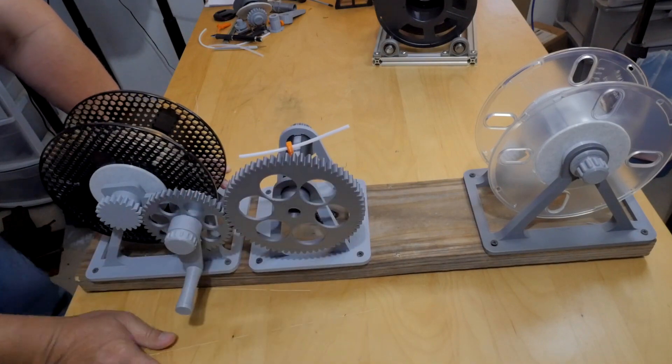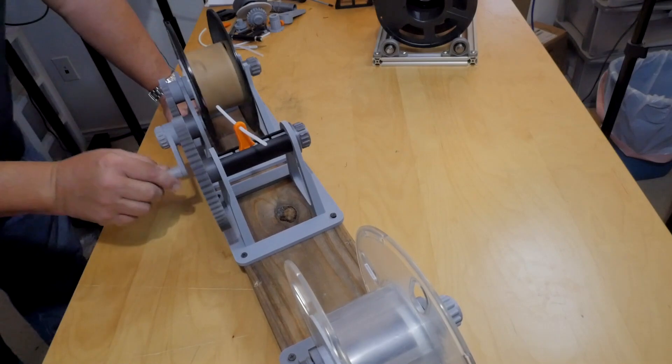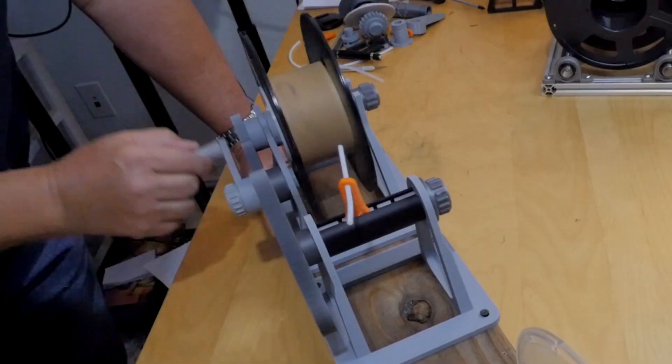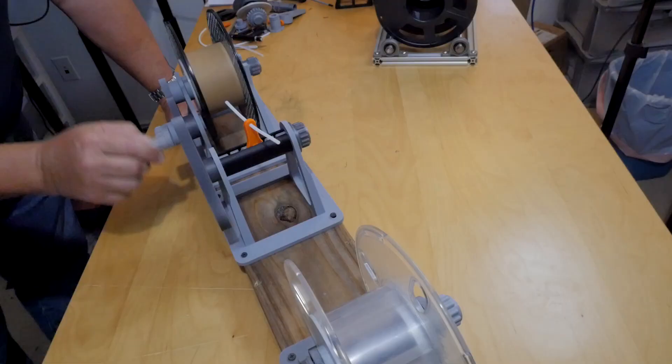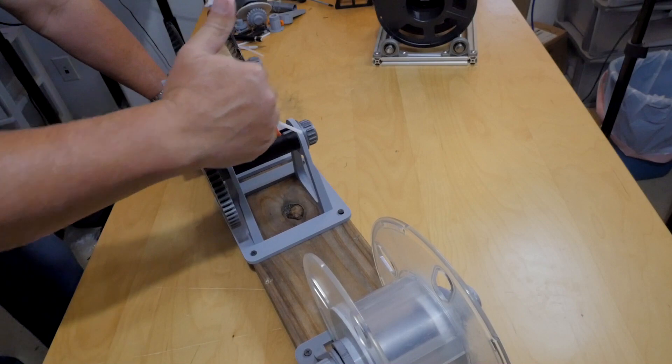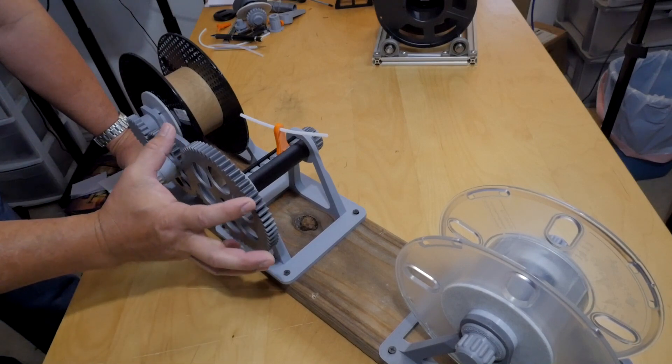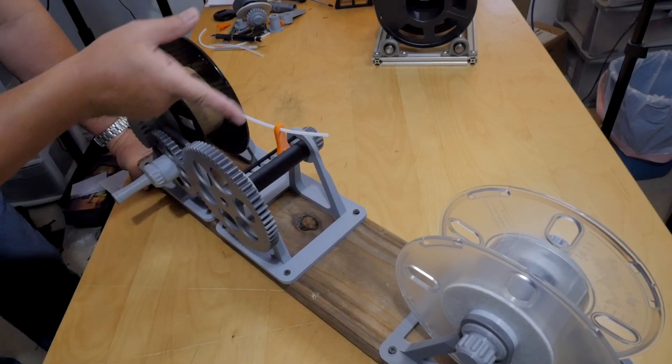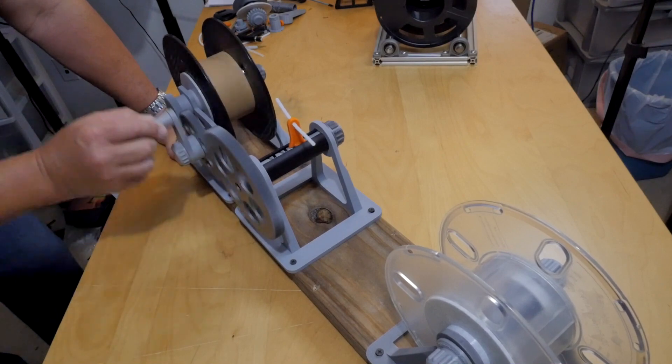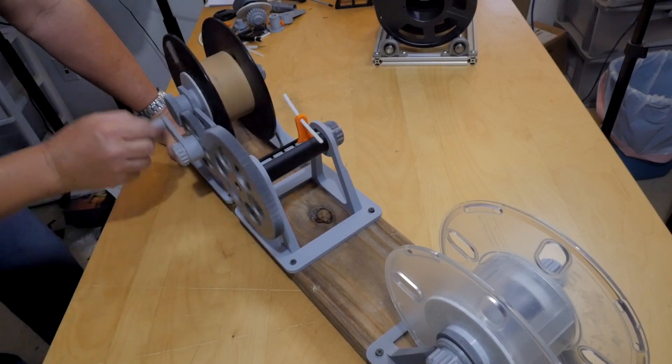From here we're going over to the mid-section, and this is the filament guide. You can see as I turn it, the guide is moving back and forth. I left the gear this size; I could slow this down by making the gear larger, and that would slow down the gear there. I'm calling it a worm gear.